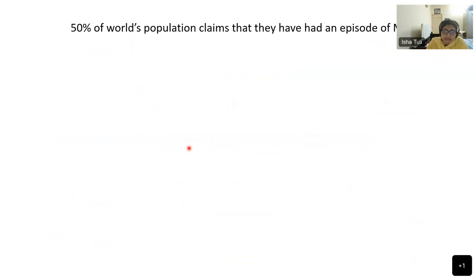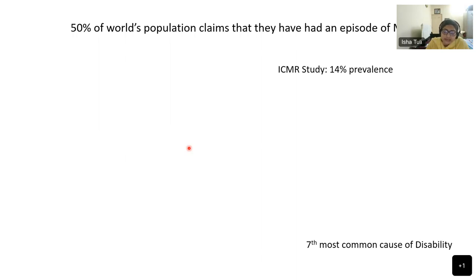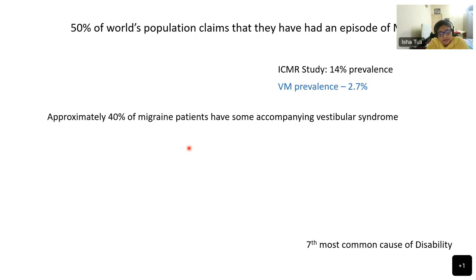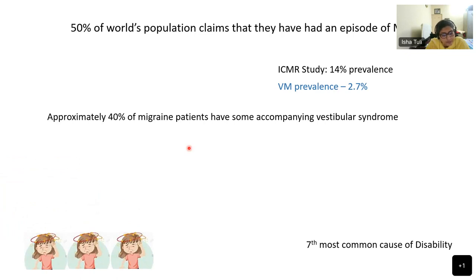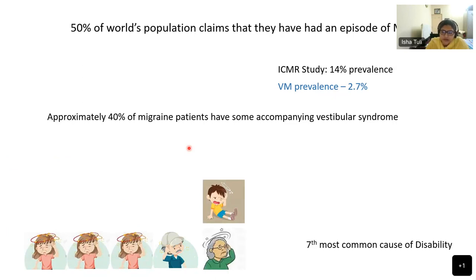Nearly half of the world's population has described having a migraine headache once in their lifetime. It is the seventh most common cause of disability and the incidence in India is 14%. That of vestibular migraine is roughly 2.7% worldwide, and approximately 40% of migraine patients have had some accompanying vestibular syndrome. Like migraine, vestibular migraine is also more common in middle-aged adults and more common in females. However, it is found in children as well, known as benign paroxysmal vertigo of childhood or congenital torticollis of childhood — described as a migraine variant. Interestingly, this childhood form is more commonly found in boys.